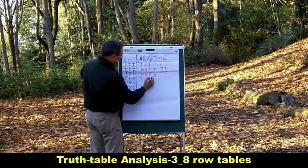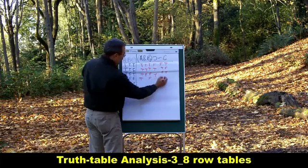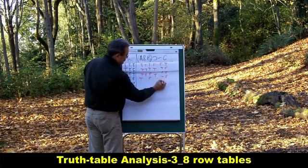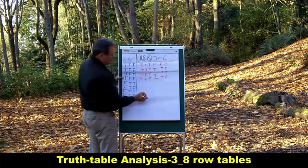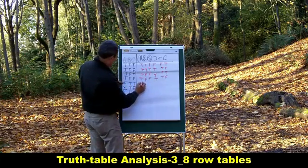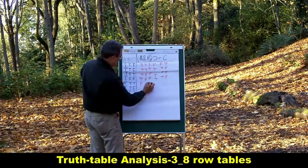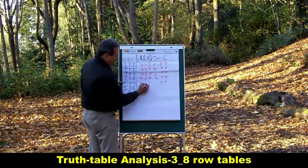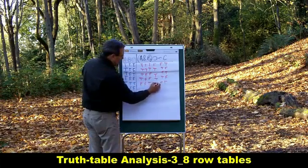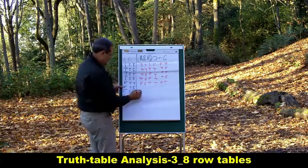That was a long one. Okay, A is true, B is false, and C is false. Tilde is gonna be true, ampersand is gonna be false, horseshoe is gonna be true. A is false, B is true, C is true, that'll be false, this'll be false, conditional is gonna be true once again.